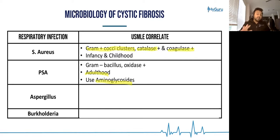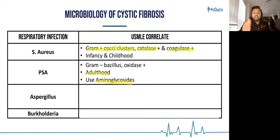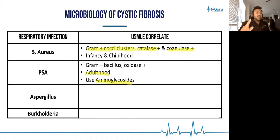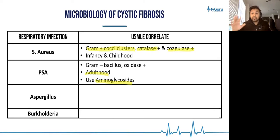Your aminoglycosides are: gentamicin, neomycin, amikacin, and tobramycin. Remember that aminoglycosides are 30S ribosomal subunit inhibitors.